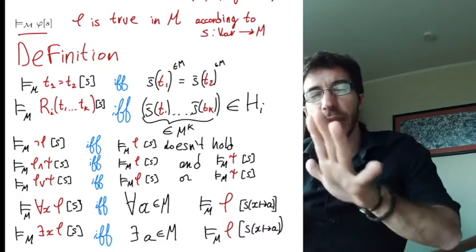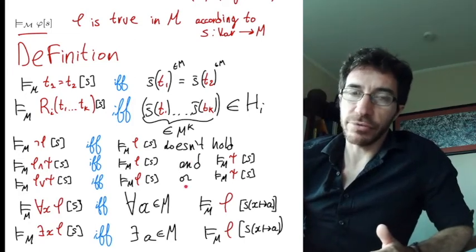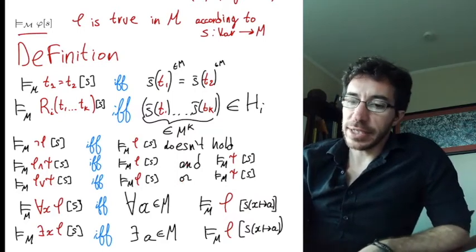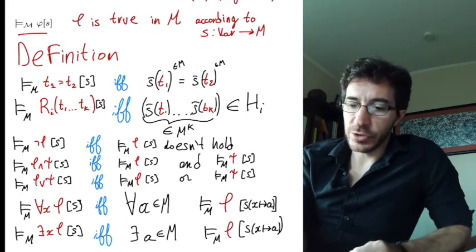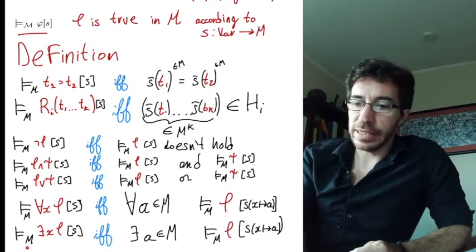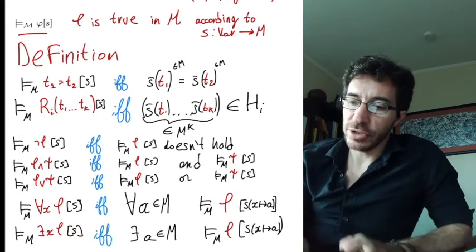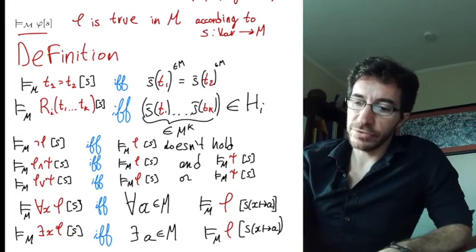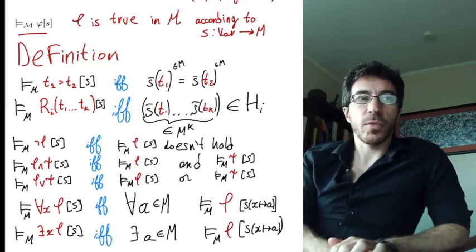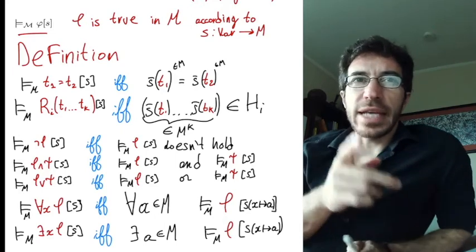This definition is pretty formal — it's a definition by recursion, and it uses our previously defined notions. But we are defining something new: a relation among three things — a formula (a string), a structure M, and a variable assignment — and we are saying when it's true or not true. We'll see some examples in class.